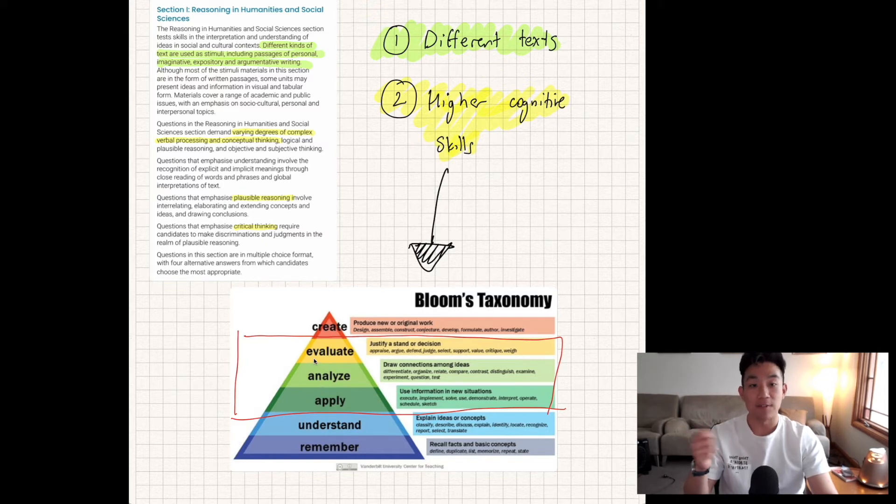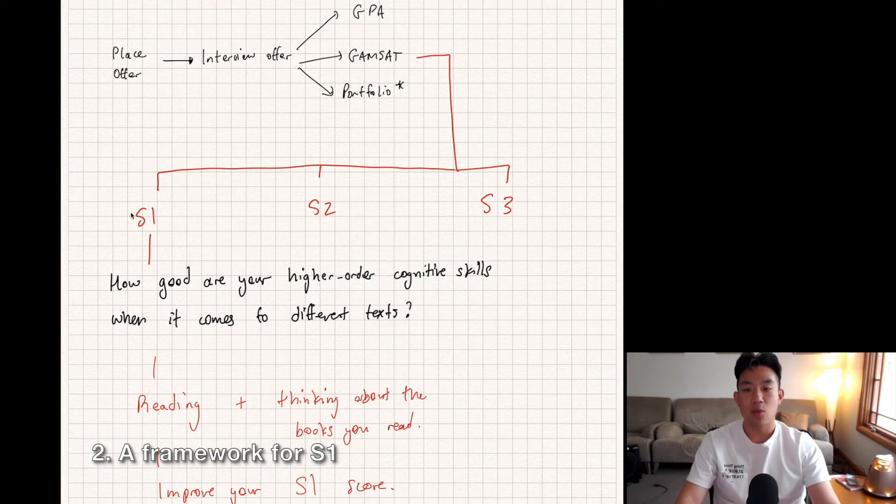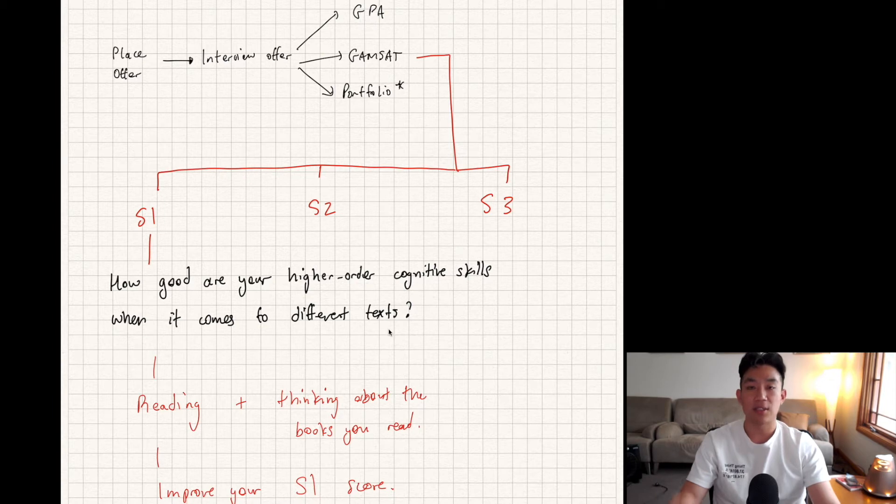Let's look at a framework for approaching Section 1. We've established that you get scored on how good your higher-order cognitive skills are when it comes to different texts. That is all you get tested on. Like an athlete getting stronger in the gym, you can train and improve in this area.